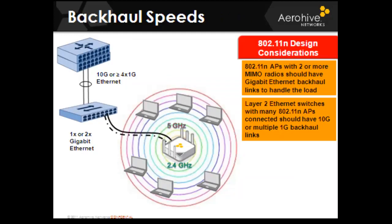Backhaul speeds: 802.11n really changed the game for Wi-Fi. The bottleneck had traditionally been thought of as the Wi-Fi speed, since you could plug in and get a 100 megabit Ethernet connection versus only about 18-20 megabits of actual throughput on 54 Mbps Wi-Fi. With 802.11n's more efficient modulation, MIMO, and channel bonding, theoretical data rates reach up to 600 Mbps, and practically today's hardware delivers around 200 Mbps throughput. In this case, standard Ethernet becomes the bottleneck, not the Wi-Fi, so deploying 802.11n may require replacing cables and switches on the infrastructure side.